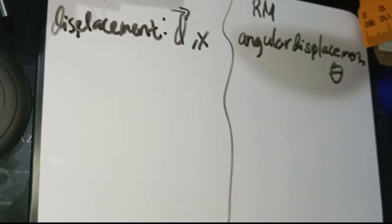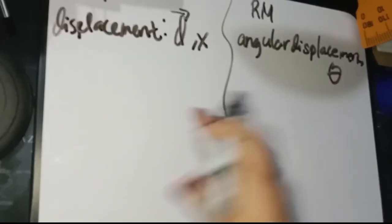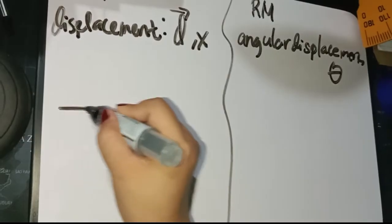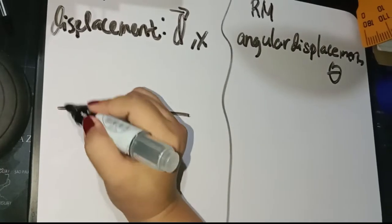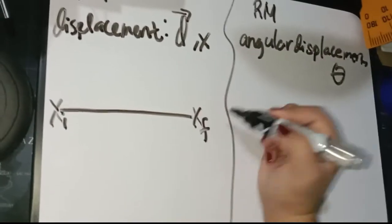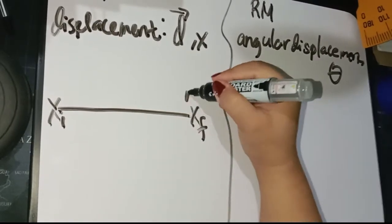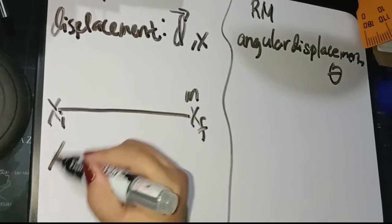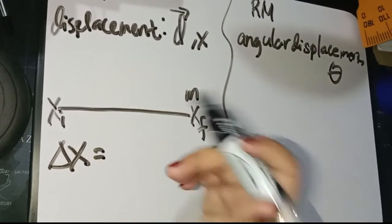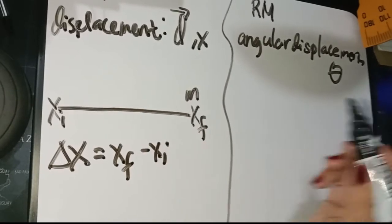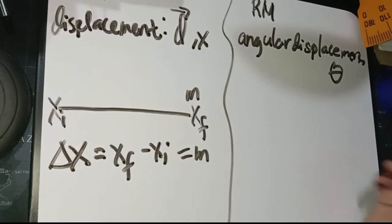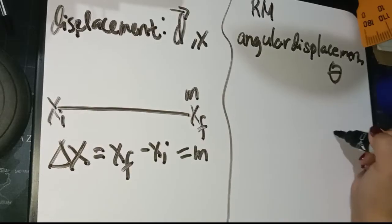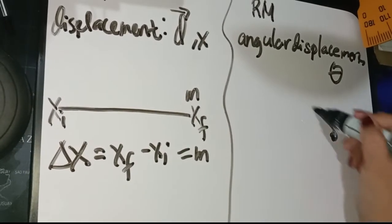We use theta because, unlike translational displacement where an object travels along a straight path from initial position X sub i to final position X sub f — giving delta X equals X sub f minus X sub i in meters — in rotational motion, a particle moves along a circular path on a fixed axis, creating an angle.